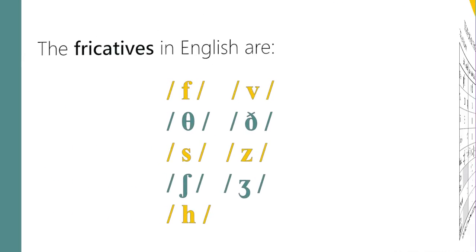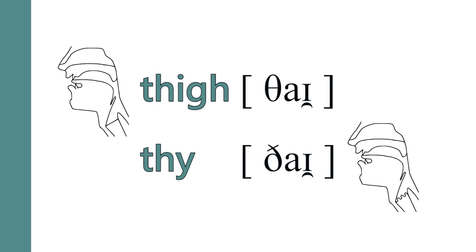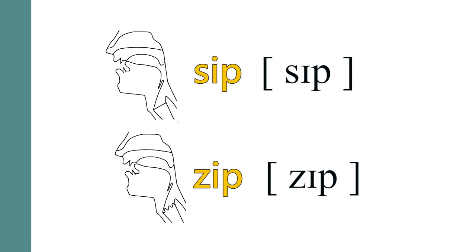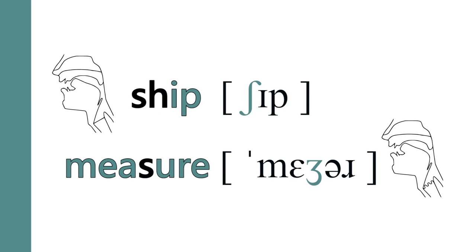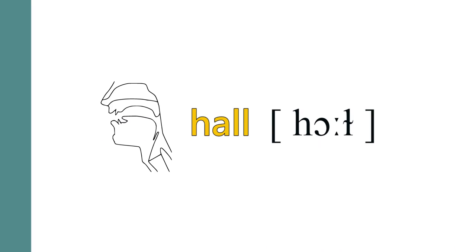Examples for all these fricatives: 'thigh' (/θ/), 'thy' (/ð/), 'sip' (/s/), 'zip' (/z/), 'ship' (/ʃ/), 'measure' (/ʒ/), and 'haul' (/h/).